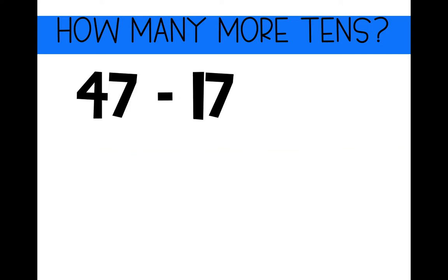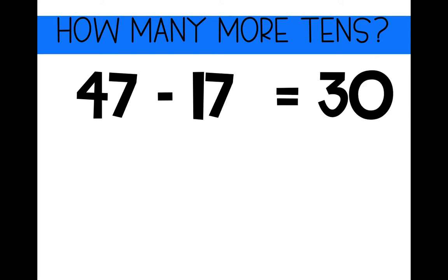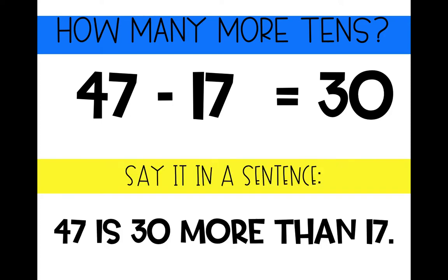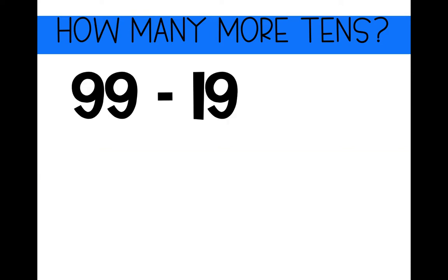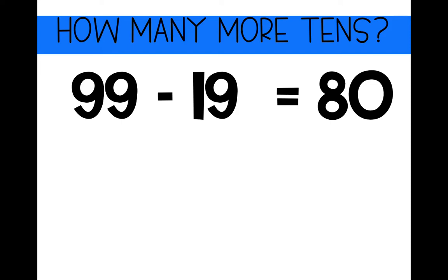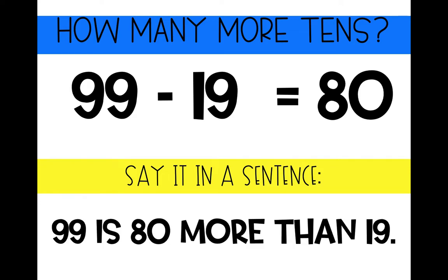47 minus 17. How many more tens is four tens than one ten? It's three tens, which is 30. 47 is 30 more than 17. Let's try this one: 99 minus 19. We see nine tens and one ten. How many more tens is nine tens than one ten? Very good — it's eight tens, so 99 minus 19 equals 80. 99 is 80 more than 19.